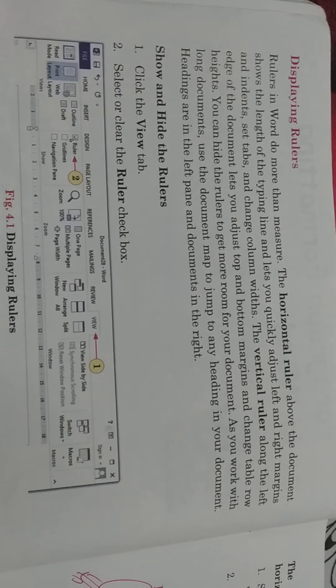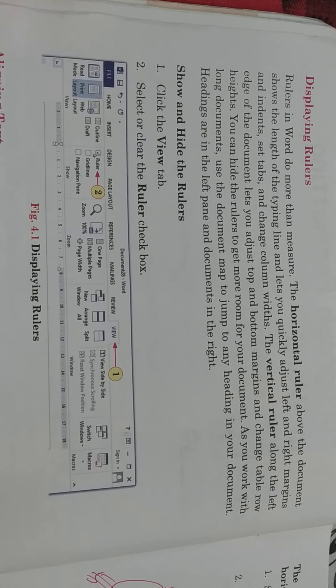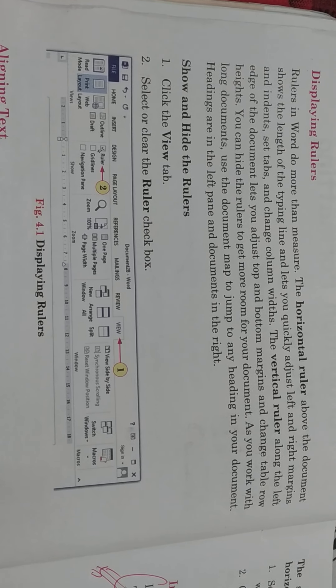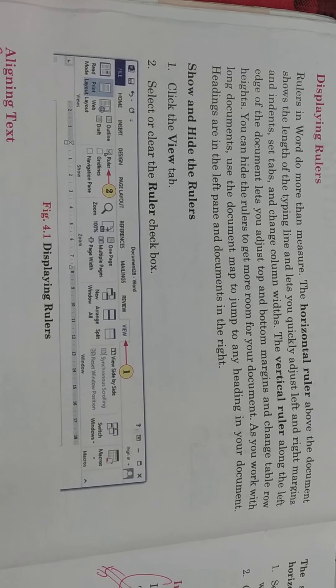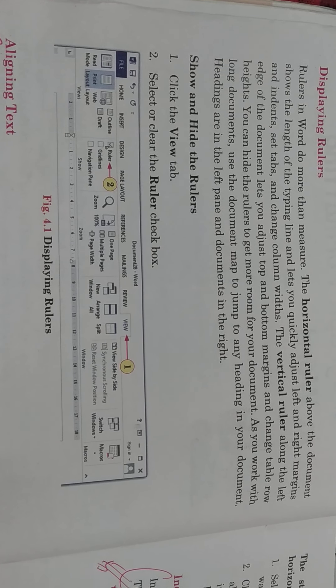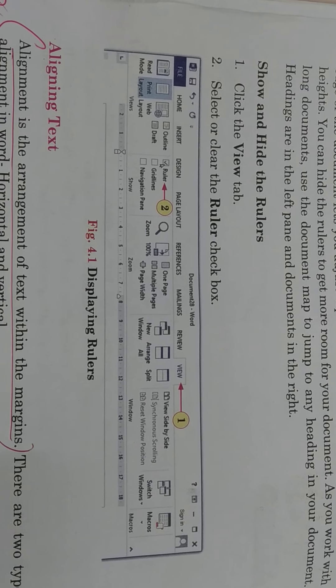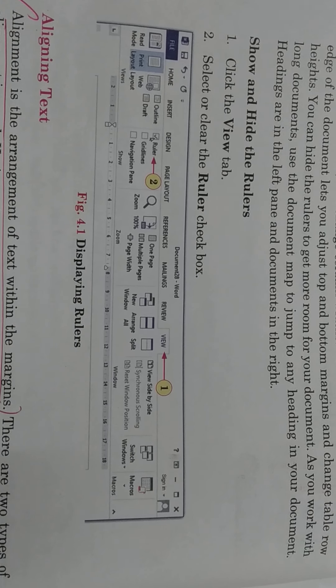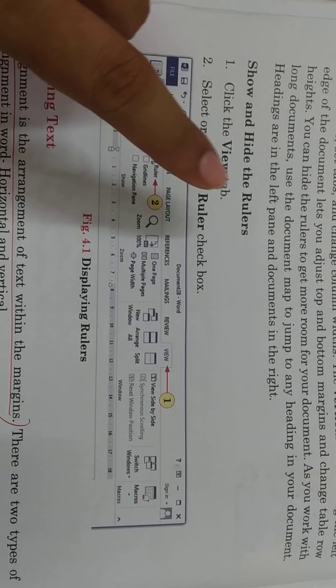Now let us turn to page 36 of your book: Displaying Ruler. Rulers in Word do more than measure. In Microsoft Word, the ruler means more than taking a measurement. The horizontal ruler above the document shows the length of the typing line, and the vertical ruler along the left edge of the document helps you to adjust the top and bottom margins and change the table row heights. As shown in Figure 4.1, click the View tab and select or clear the Ruler checkbox — if you click on this checkbox, you will be able to view the ruler.